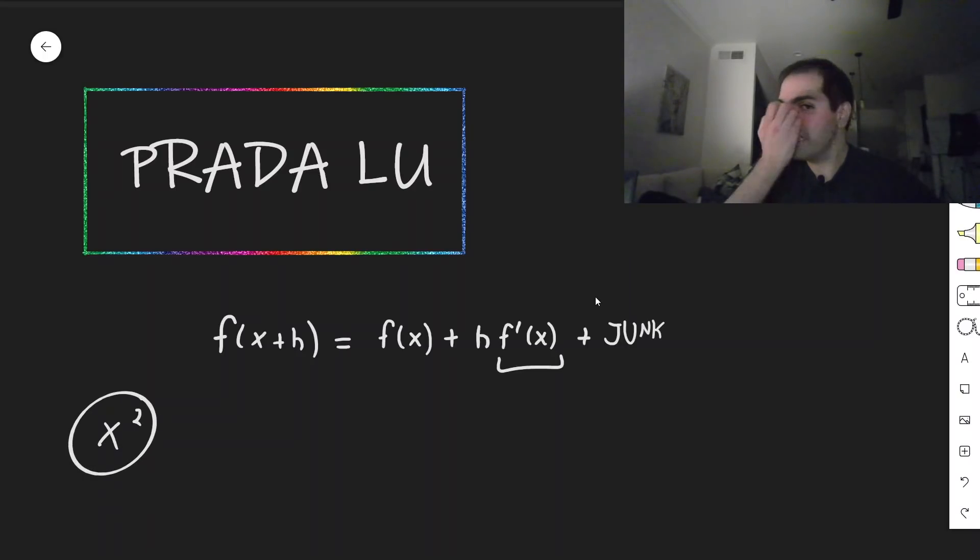So let's try to find the derivative of x squared. Well, expand out x plus h squared, that becomes x squared plus 2hx, so h times 2x, plus h squared, which is small anyway. So in particular, because of this identity, we rigorously have that the derivative of x squared becomes 2x.